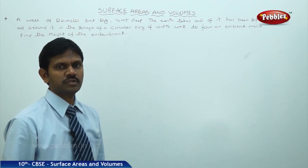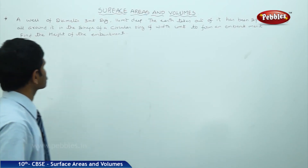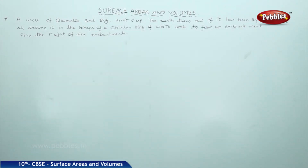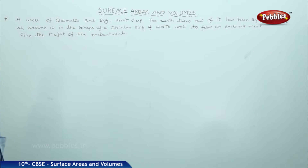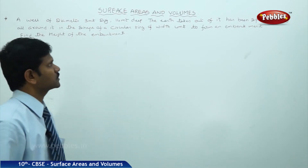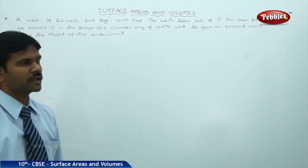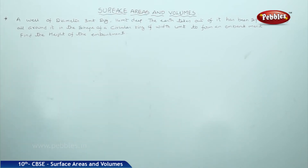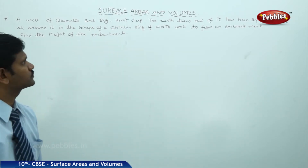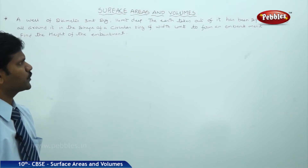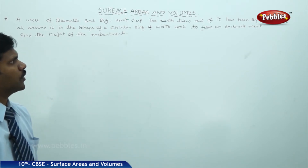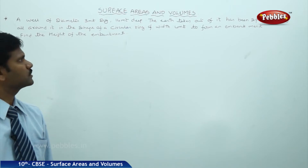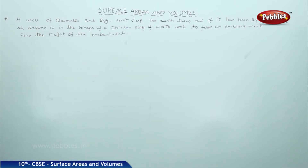Let us see the next question. A well of diameter 3 meters is dug 14 meters deep. The earth taken out has been spread evenly all around it in the shape of a circular ring of width 4 meters to form an embankment. Find the height of the embankment.